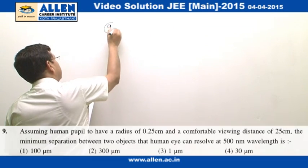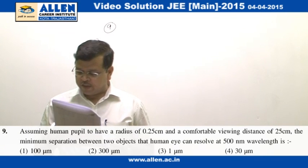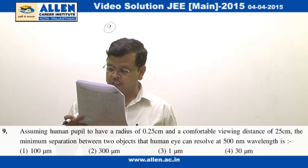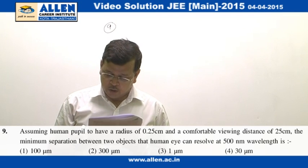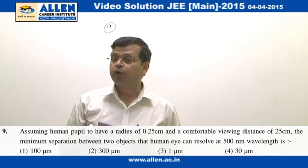Question number 9. In this question you have been asked to find out the minimum distance between the objects which a human eye can resolve by looking at these objects from a distance of 25 cm.